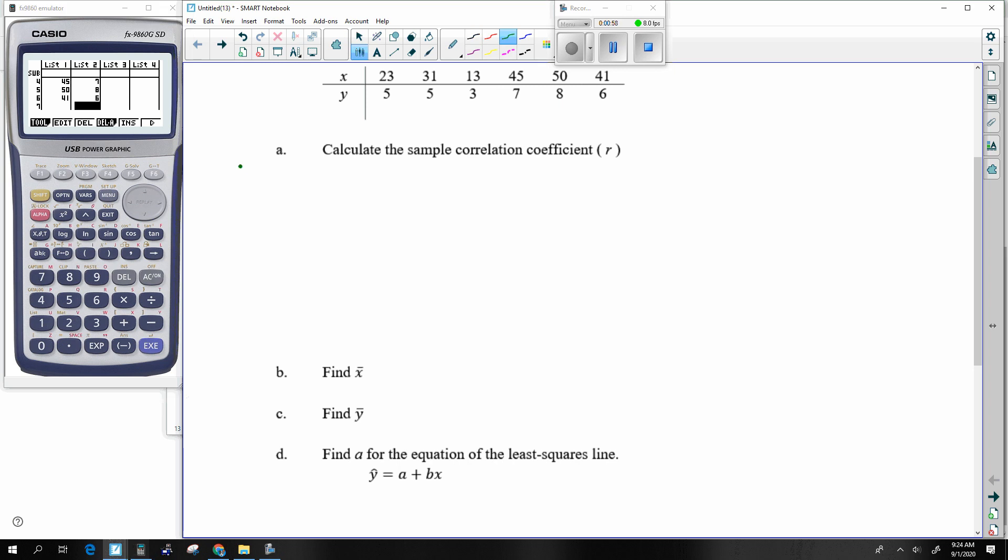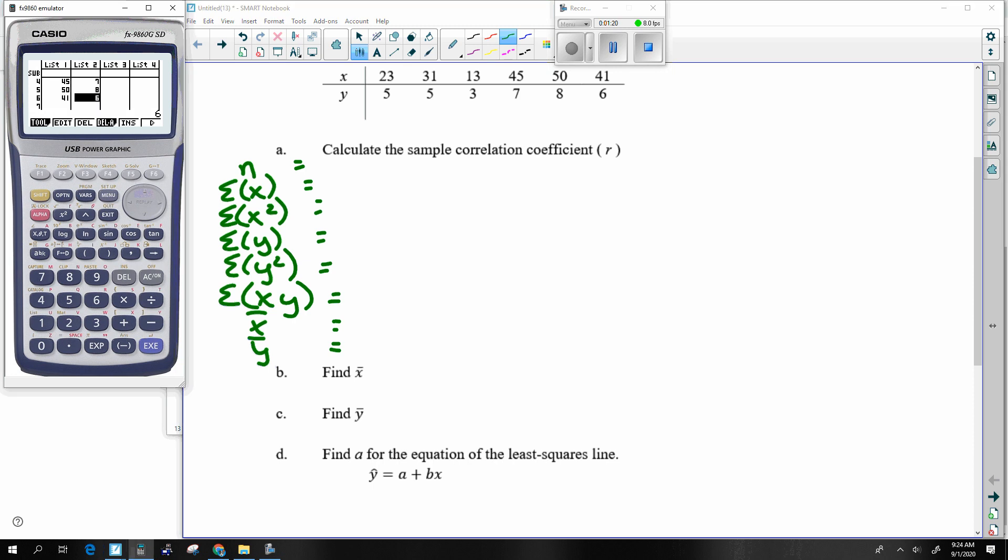So let's do it in green here: n, sum x, sum x squared, sum y, sum y squared, sum xy, x bar, y bar. Alright, so just looking at my list right now, I can see that there are six total pairs of numbers. Everything else I kind of have to do some grunt work.